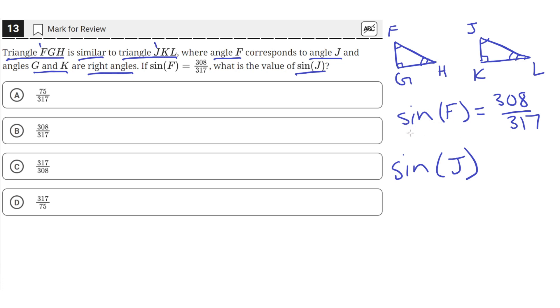Which means that the sine of F is also equal to the sine of J, since they are equal triangles. So that means the sine of F has to equal 308 over 317. So the answer should be B, 308 over 317, the same as the sine of F.